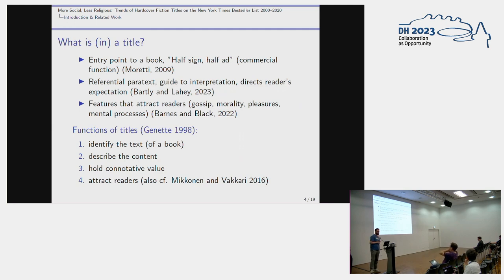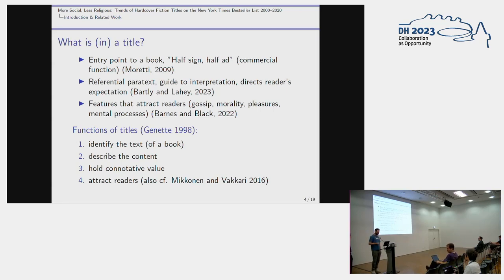So what is a title? Moretti claims a title is an entry point to a book — it is half sign, half ad, so it has a commercial function. Lahaye describes it as a referential paratext: it refers to the content of the book, gives a guide to interpretation, and directs the reader's expectations. A title typically contains features that attract readers, such as gossip, morality, pleasures, and mental processes. Jeanette sums it up with a small typology: a title identifies the text, describes its content, holds connotative values with an emotive function, and should attract readers.